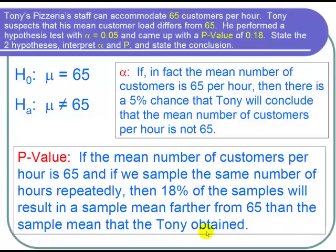So Tony obtained some sample mean, it might have been 69, and we want to see what's the probability that we would get something bigger than 69, or on the other side of the tail, less than 61 because that would be 4 away on either side, and that would be our p-value.